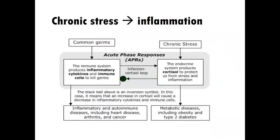We'll then learn about the role of chronic stress — chronically high levels of stress — and its role in the inflammation process. We'll learn about what happens with inflammation and its role in turning off the cortisol loop. In other words, instead of returning to baseline after experiencing high levels of cortisol, it turns off that negative feedback loop so that cortisol remains high. We'll then look at what happens when cortisol runs chronically high.